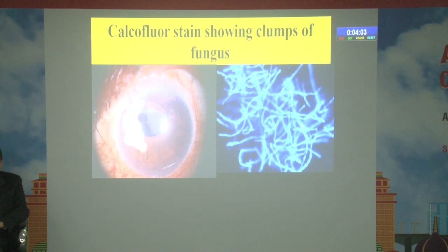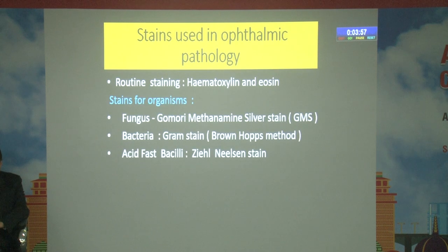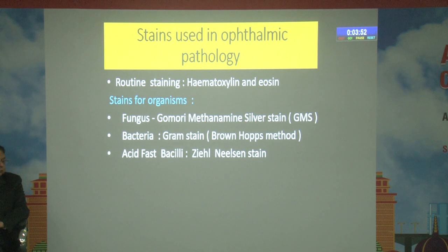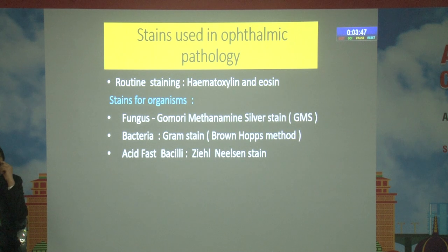This is a calcofluor stain showing clumps of fungus — you can see the fungus ball. Stains used in ophthalmic pathology include the routine hematoxylin and eosin stain, stains for organisms such as fungus using Gomori methenamine silver stain. For bacteria we use Gram stain and Brown-Hopps method. For acid-fast bacilli, we use the Ziehl-Neelsen stain.